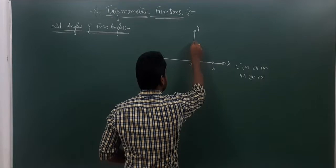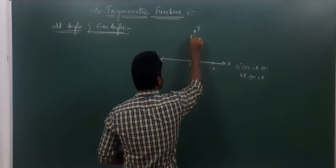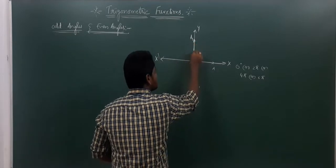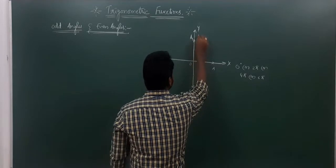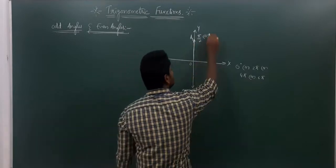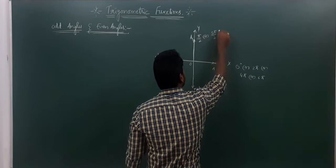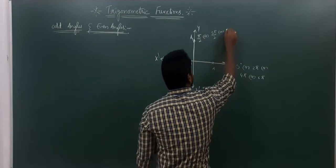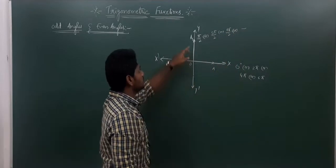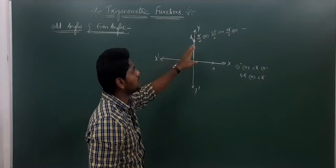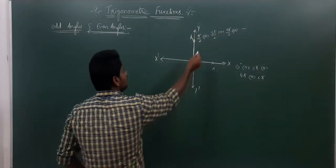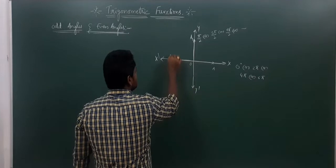If ray OA comes to the positive y-axis — call it OA1 — the angle can be π/2, or adding 2π gives 5π/2, or adding another 2π gives 9π/2, and so on. If the ray OA2 goes to the negative x-axis, the angle is π, or 3π, or 5π, and so on.